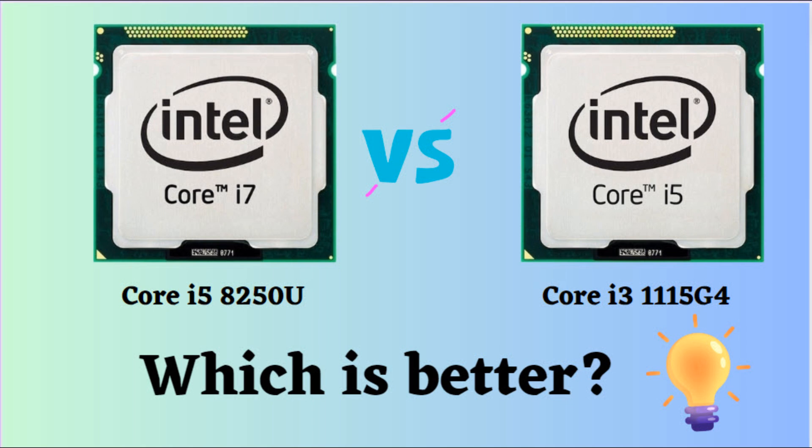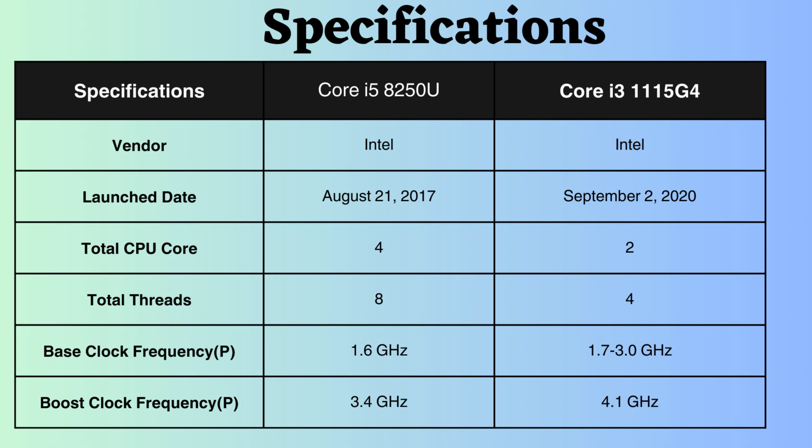In this video, I'll compare the Intel Core i5-8250U and Intel Core i3-1115G4, highlighting their differences. Following that, I'll offer a conclusion to help you in deciding which one is the superior choice. Both the Core i5-8250U and Core i3-1115G4 are Intel processors, originating from different generations with varying core counts and speeds.